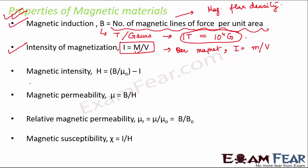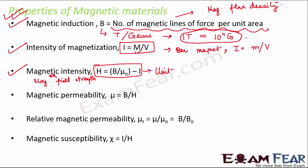The next property is magnetic intensity, also known as magnetic field strength, denoted by H. It is expressed as H equals B by mu naught minus 1. Magnetic intensity shows the ability of a magnetic field to magnetize a substance — it is about the ability of the field. Intensity of magnetization is about the ability of the substance to get magnetized. The unit of H is ampere per meter.